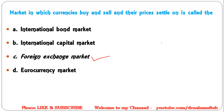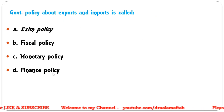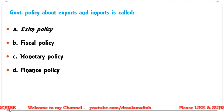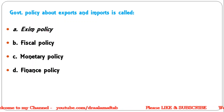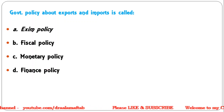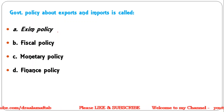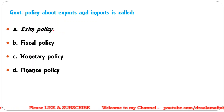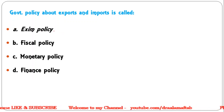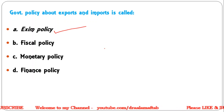Next question: Government policy about exports and imports is called — EXIM policy; fiscal policy; monetary policy; finance policy. The answer is EXIM policy — export and import policy — which is also known as commercial policy.